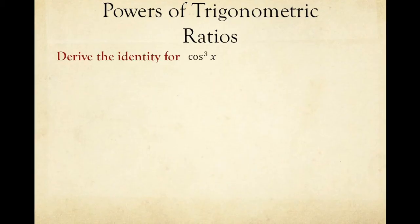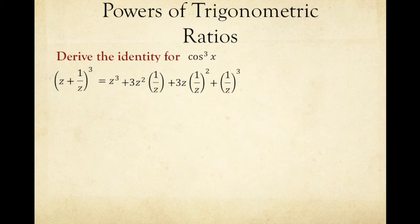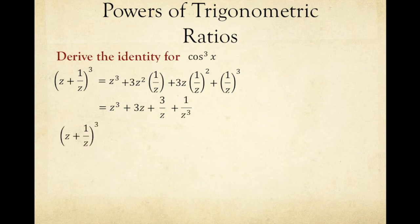To derive the identity for cosine cubed x, we begin by finding the cube of z plus 1 over z using the binomial theorem. That expands to z cubed plus 3z squared times 1 over z plus 3z times the square of 1 over z plus the cube of 1 over z. Simplifying, this equals z cubed plus 3z plus 3 over z plus 1 over z cubed.